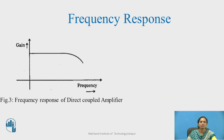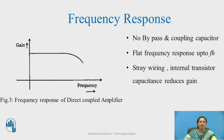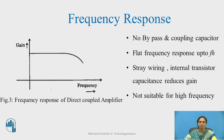The frequency response of the direct coupled amplifier gives a flat response at low frequencies. For a frequency value of zero, we still obtain large gain, so this amplifier can be used for amplification of DC signals. As no bypass and coupling capacitors are used, we get a flat frequency response up to FH. After FH, stray wiring capacitance and internal transistor inter-electrode capacitance reduce the value of gain, making it unsuitable for high frequency signals.